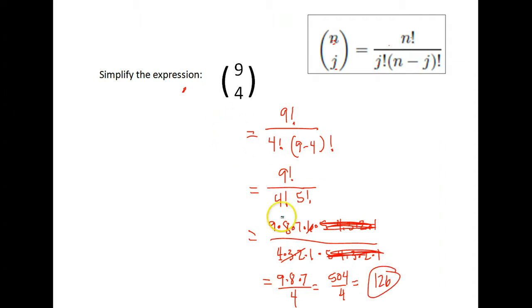Nine times eight times seven is 504 divided by four gives me 126. So the answer to this, the combination of nine taken four at a time, is 126.